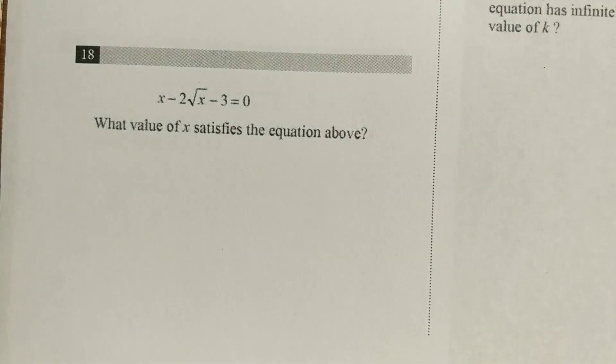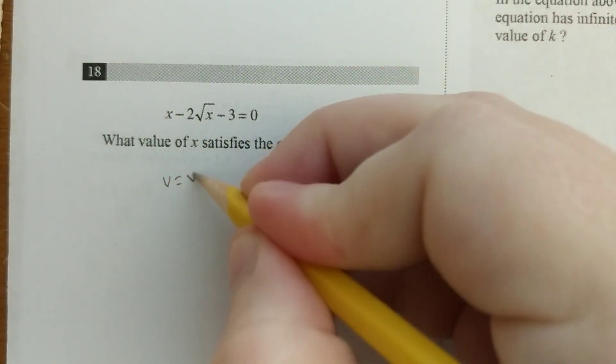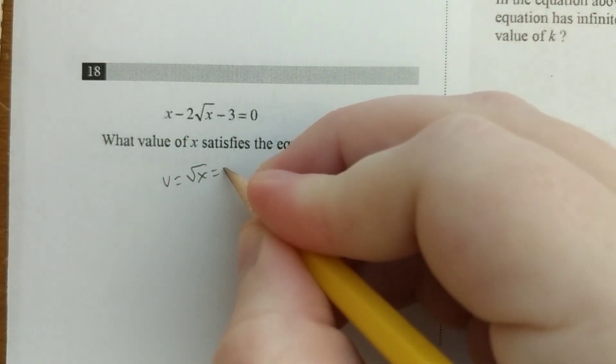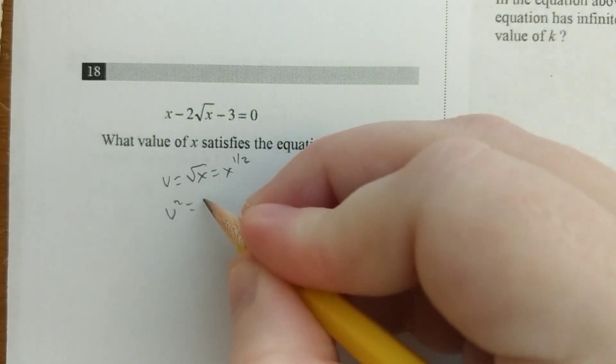Okay. Here's another example. This one's a little harder. So here we're going to say that u equals the square root of x, which is the same thing as x to the 1 half. And that would mean that u squared is x.